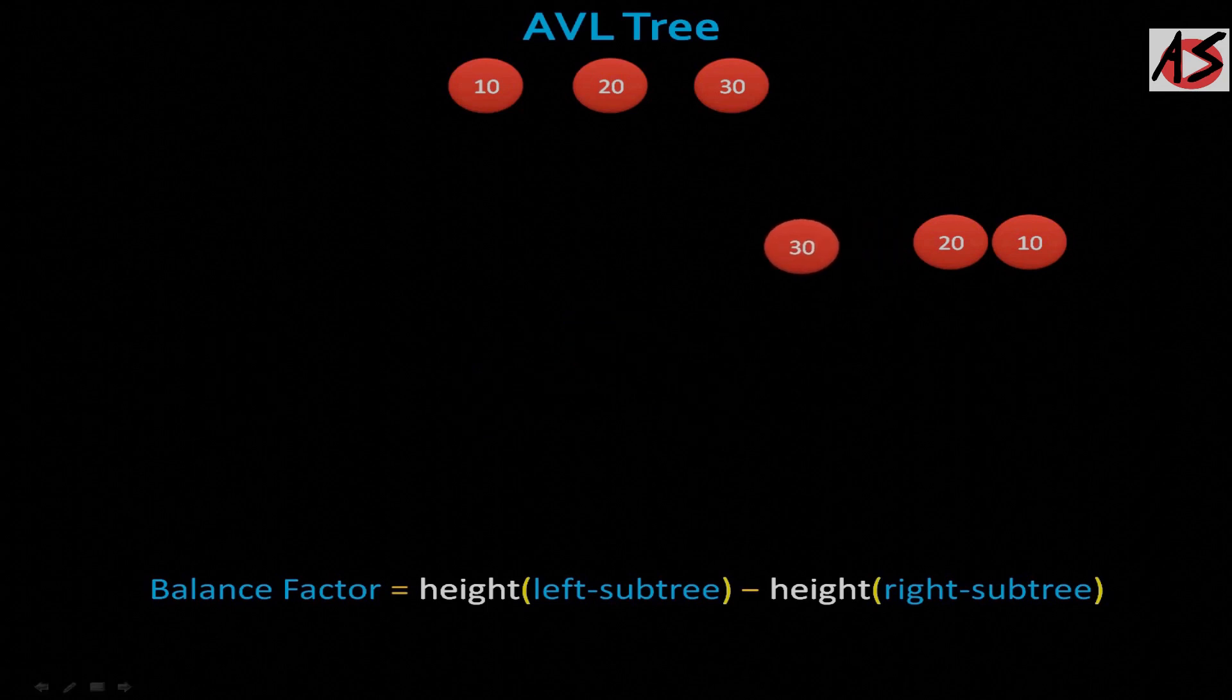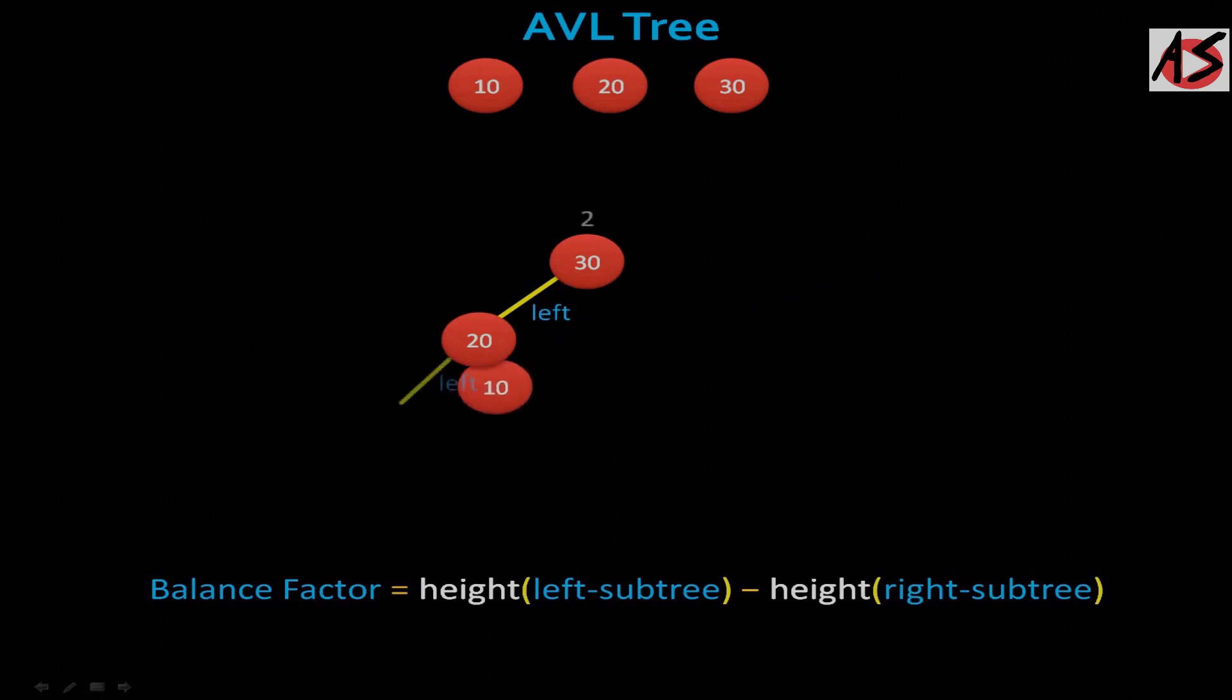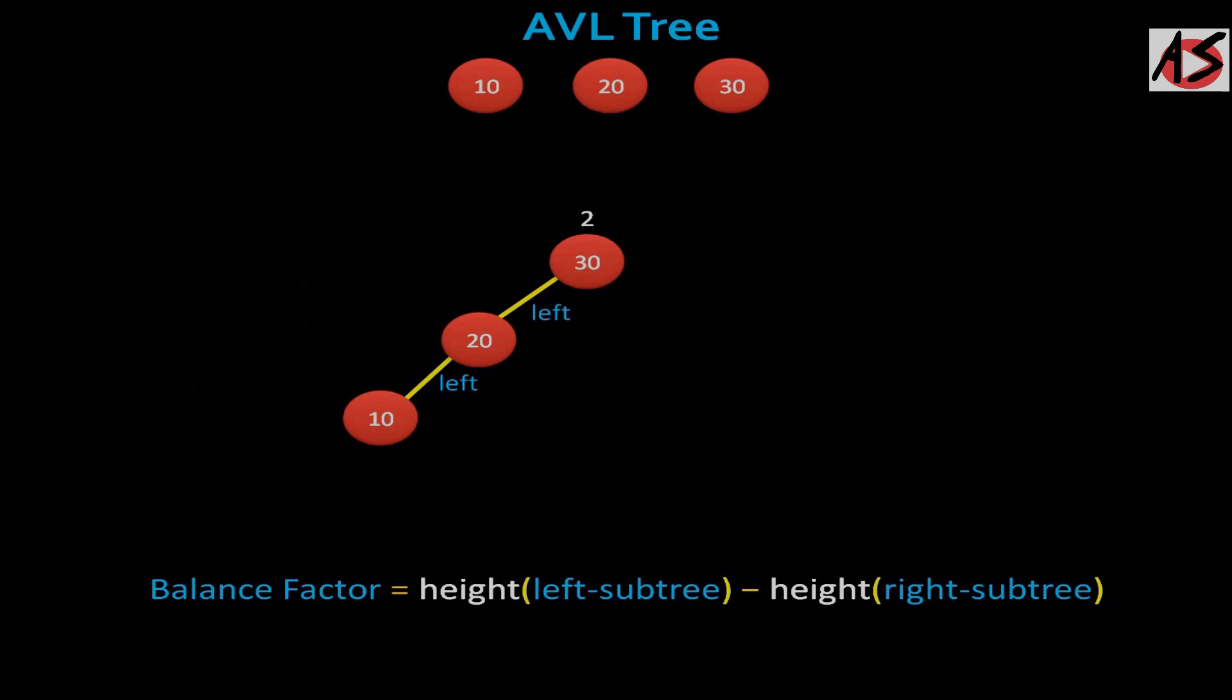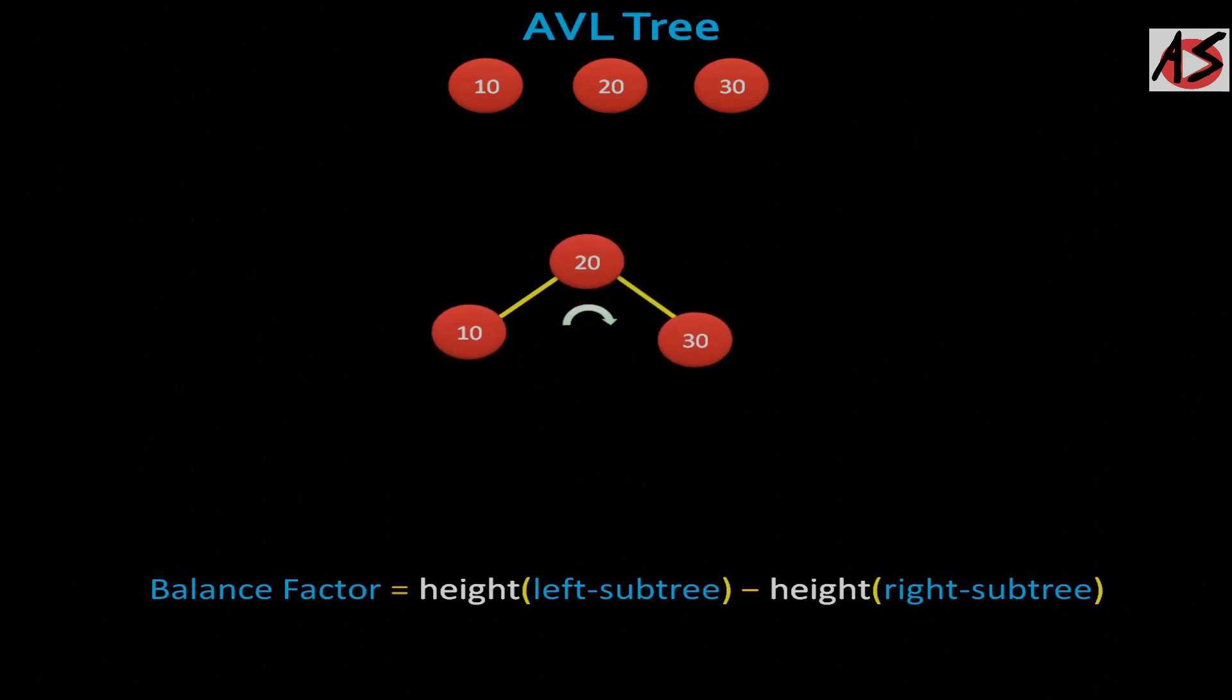For the last order, that is 30, 20, and 10, you will get left skewed binary tree like this. This is left left insertion case. So to balance the root, you can perform right rotations on 30 and you will get AVL tree.